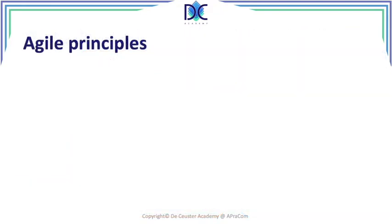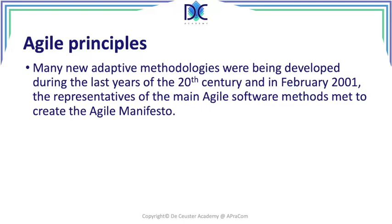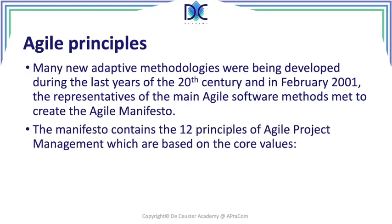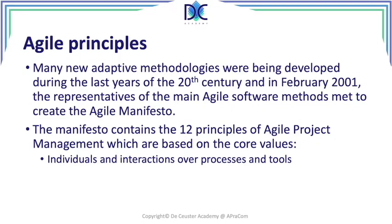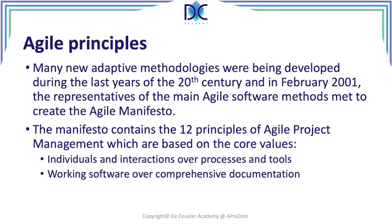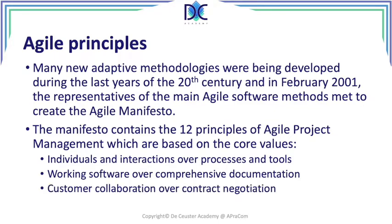When we look at Agile, we also have to understand the Agile principles. Before Agile, people were already trying to find more adaptive project management methods. In 2001, the people who had been developing Agile software met to create what we call today the Agile manifesto. The manifesto has 12 principles based on four core values: individuals and interactions over processes and tools, working software over comprehensive documentation, customer collaboration over contract negotiation, and responding to change over following a plan.